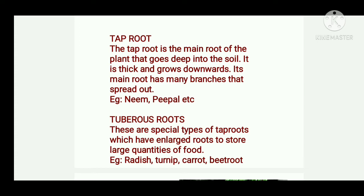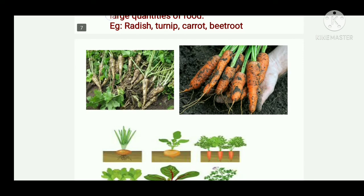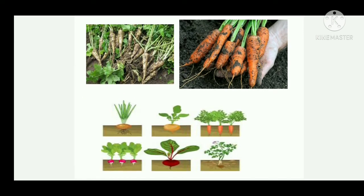Examples of taproot are neem and peepal. We also have tuberous roots — these are a special type of taproot which have enlarged roots to store a large quantity of food. Examples are radish, turnip, carrot, and beetroot. You can see in this picture various examples of taproots and tuberous roots. They have one main root and other branches spread out from it, while tuberous roots like radish and carrot are thick as they store extra food.